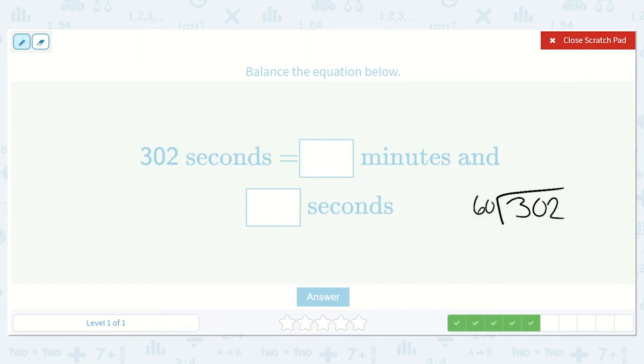So 60 won't go into 30, but 60 will go into 302. Let's see how many times. Let's count by 60s: 60, 120, 180, 240, 300. Oh, 300. So that was five times.